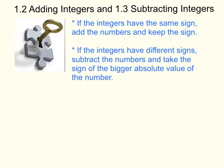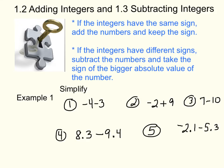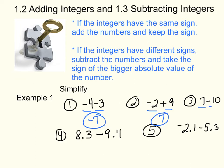Let's do the first five examples. Number 1: simplify negative 4 minus 3. Negative 4 and negative 3 are the same sign, so add them and keep the sign — that gives negative 7. Number 2: negative 2 plus 9. Different signs, so subtract: 9 minus 2 is 7. Since 9 is bigger, the answer is positive 7. Number 3: 7 minus 10. Different signs, subtract: 10 minus 7 is 3. Since there are more negatives, the answer is negative 3.